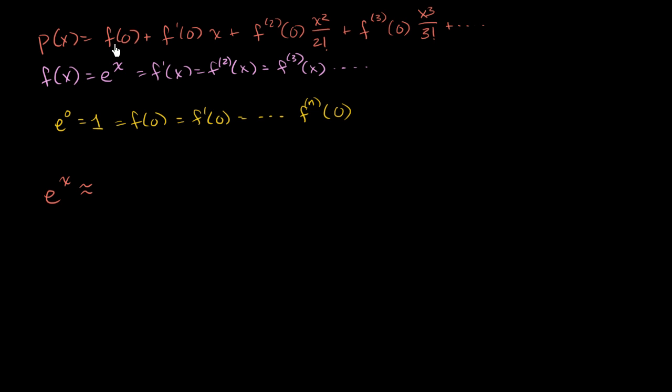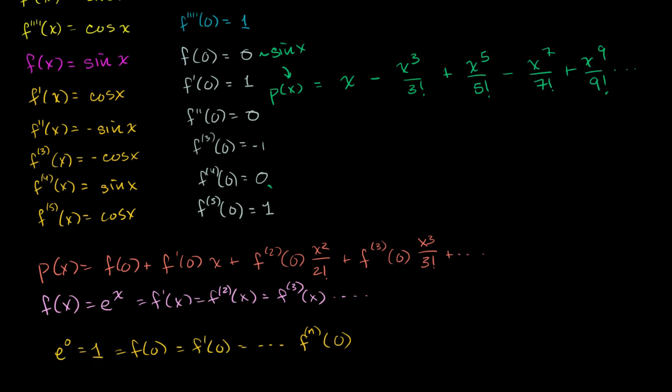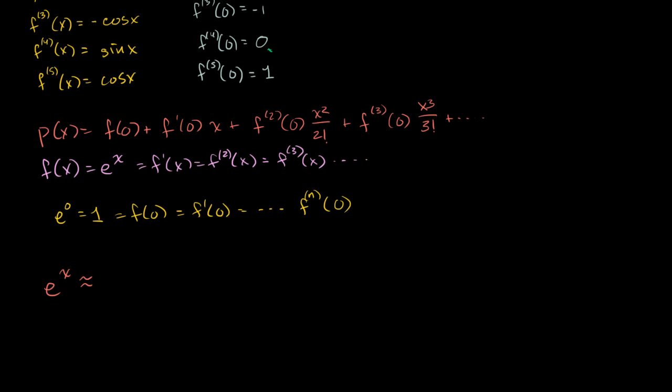f of 0. Let me do it in what colors did I use for cosine and sine? So I used pink and I used green. So let me use a non-pink, non-green. I'll use the yellow here.